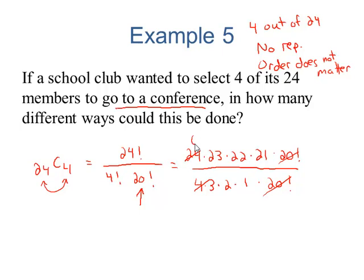4 goes into 24 6 times, 3 goes into 21 7 times, 2 goes into 22 11 times. There are other ways you could have reduced this as well. 4 times 3 times 2 is 24. When we multiply what remains, we're left with 10,626.